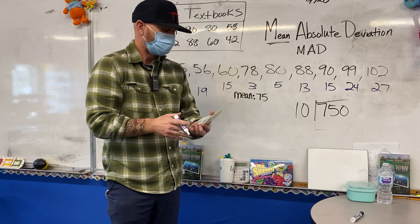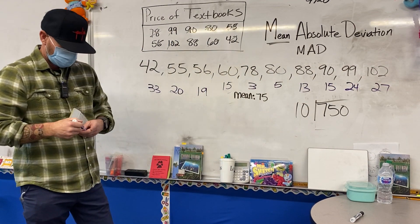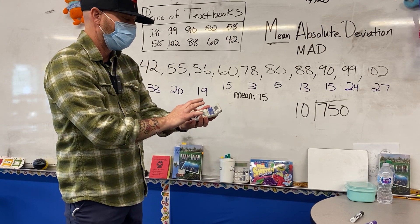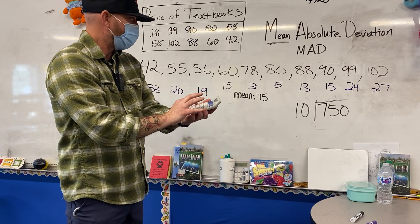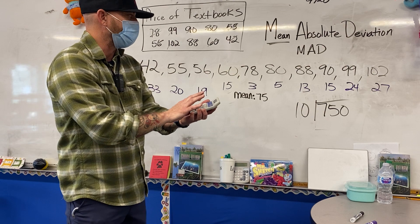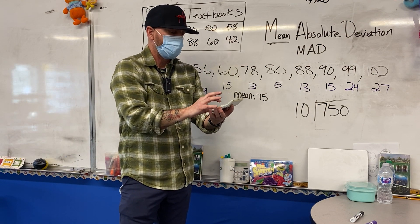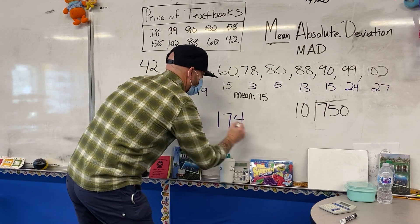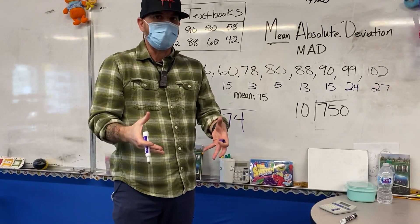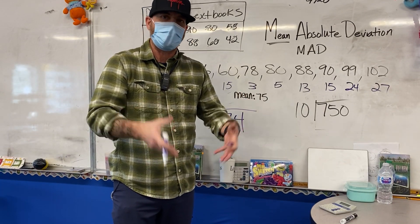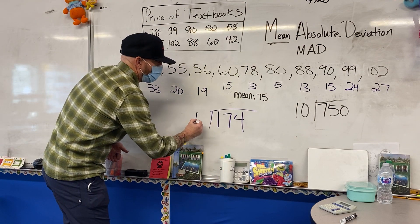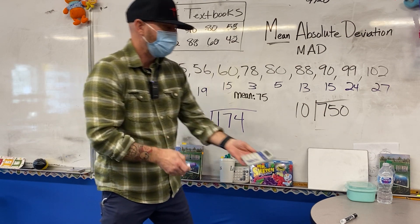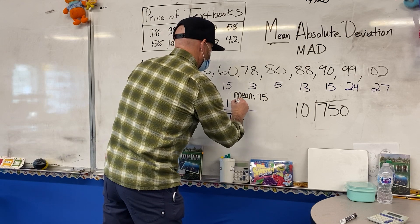The next step, we have to add all of those differences. So we're going to add: 33 plus 20 plus 19 plus 15 plus 3 plus 5 plus 13 plus 15 plus 24 plus 27. That gives me 174. Now with that sum total of the differences, I have to divide by the number of data values — there were 10. So 174 divided by 10 gives me 17.4.